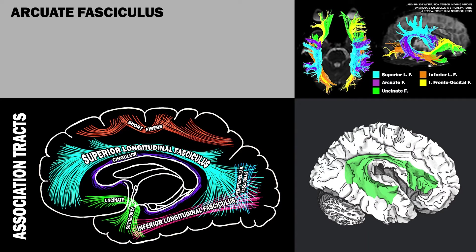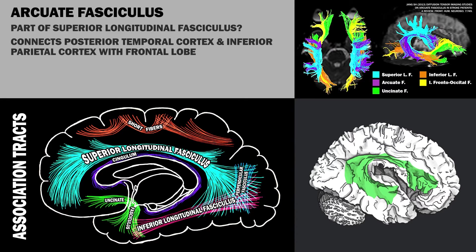There is debate as to whether the arcuate fasciculus is a distinct bundle of axons, or whether it forms part of the superior longitudinal fasciculus. In any case, it bidirectionally connects the posterior temporal cortex and the inferior parietal cortex with the frontal lobe, where it terminates in the precentral gyrus.